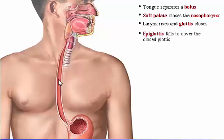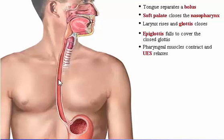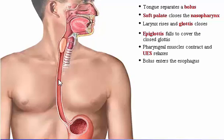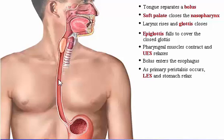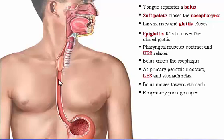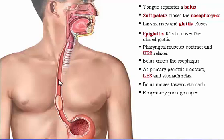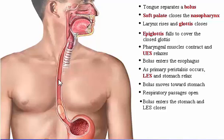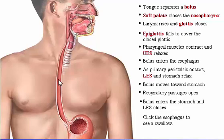The epiglottis falls to cover the closed glottis. Muscles of the pharynx contract sequentially in peristaltic fashion, and the bolus enters the esophagus. As primary peristalsis begins in the esophagus, the lower esophageal sphincter and proximal body of the stomach relax. The peristaltic wave is propagated by sequential activation of the muscles of the esophagus. As the bolus progresses, the larynx, tongue, and soft palate revert to their original positions and respiration resumes. The bolus enters the stomach and the lower esophageal sphincter closes, preventing regurgitation.